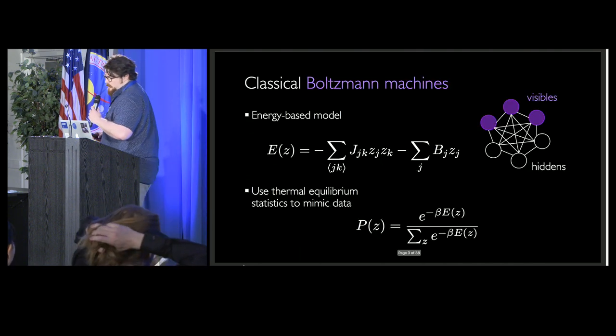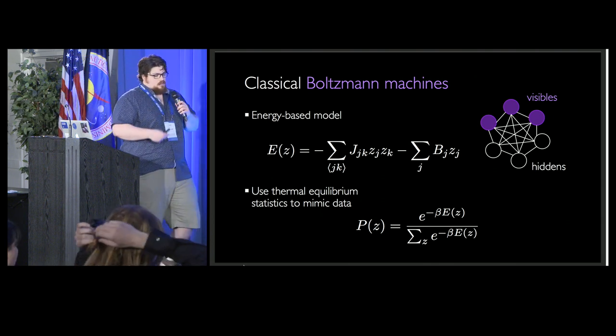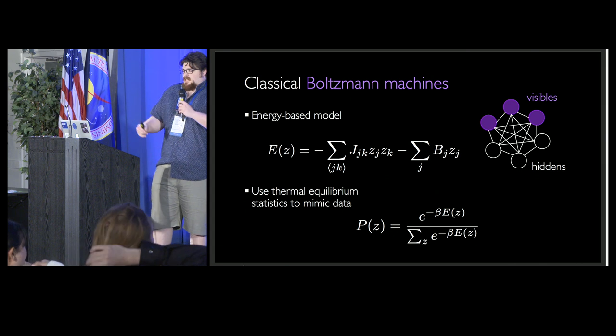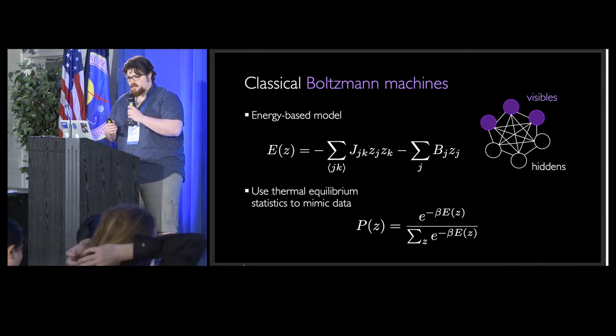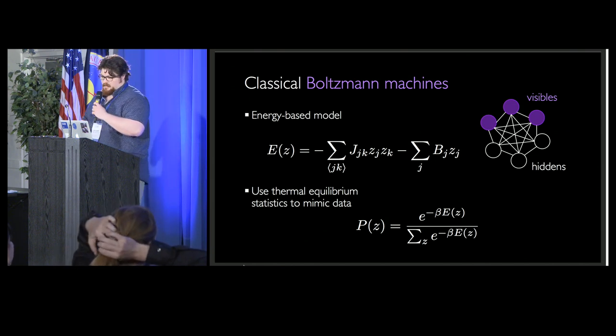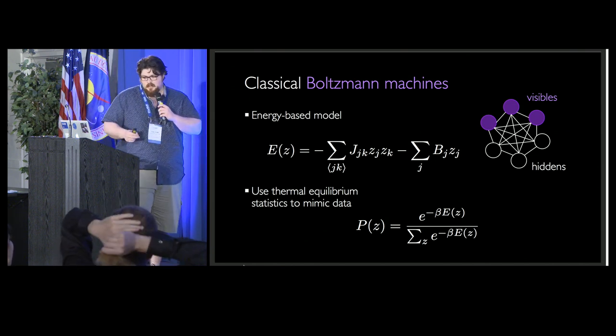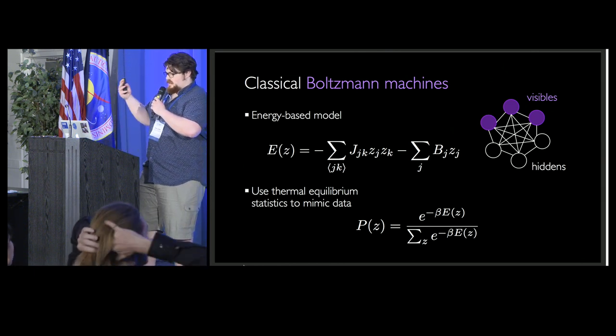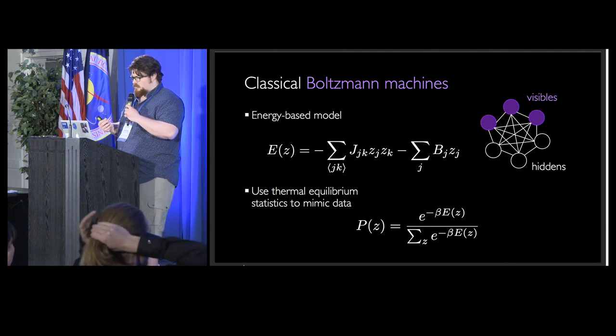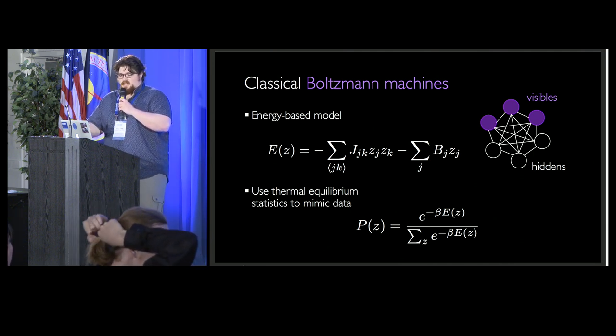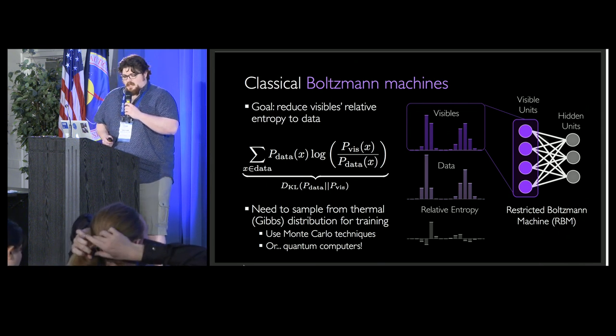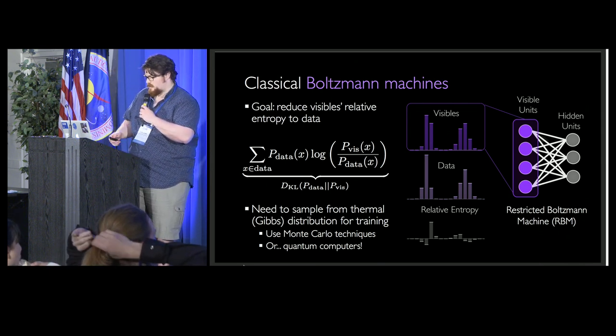So quantum approximate Boltzmann machines. Let's start with a high-level overview. First I'll introduce what is a Boltzmann machine. This is a specialist audience, so I'm going to go pretty fast here. What we're trying to do is we have a model made of a bunch of spins, tiny magnets. We couple them in a bunch of ways and put biases, and their statistics at equilibrium should give you some reduced statistics on a subset of spins that you call the visibles.